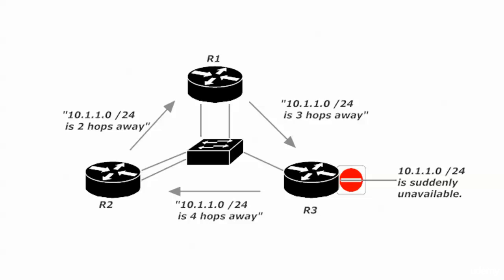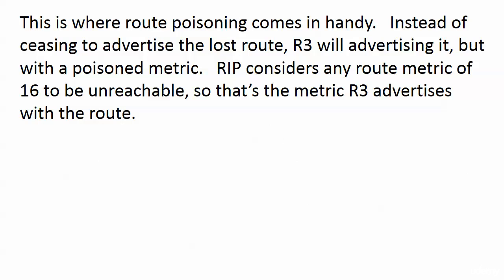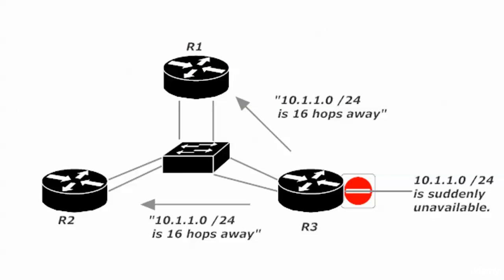Fortunately, route poisoning is on by default. With route poisoning, router 3 will continue to advertise the lost route, but it will do so with a poisoned metric. RIP only understands hop count, and a hop count of 16 indicates an unreachable route. So that is the metric router 3 advertises with the route. This is what happens in our network because route poisoning works.